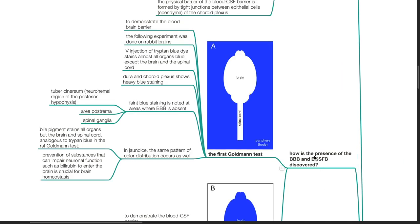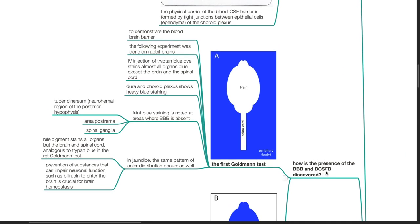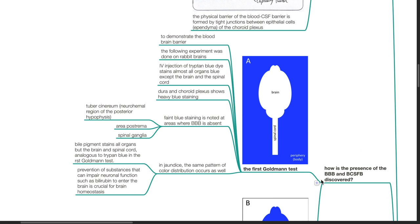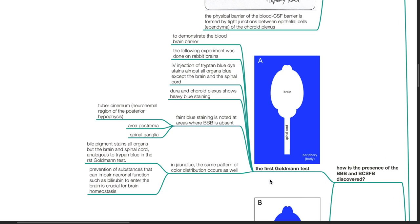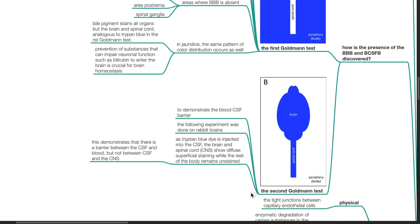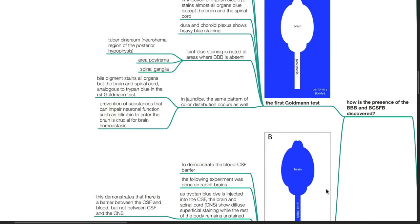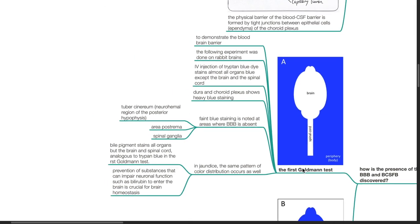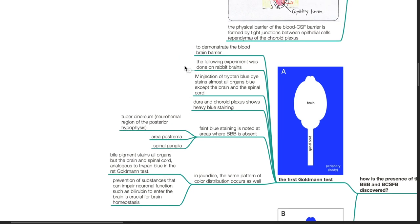How is the presence of the blood-brain barrier and blood CSF barrier discovered? The blood-brain barrier is demonstrated by the first Goldmann test, and the blood CSF barrier is demonstrated by the second Goldmann test. In the first Goldmann test, the following experiment was done on rabbit brains. IV injection of trypan blue dye stains almost all organs blue except the brain and the spinal cord.